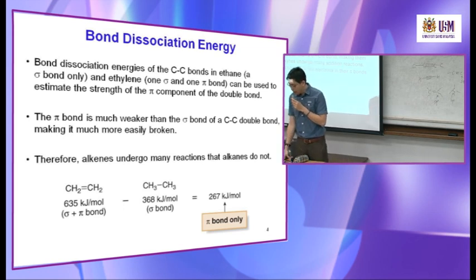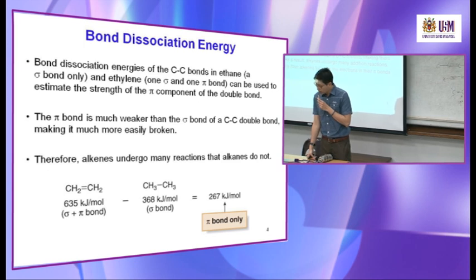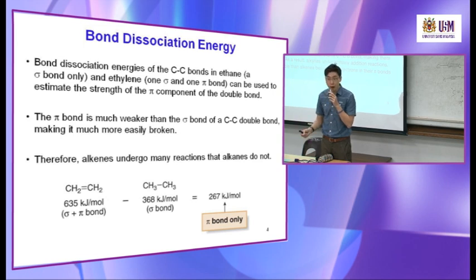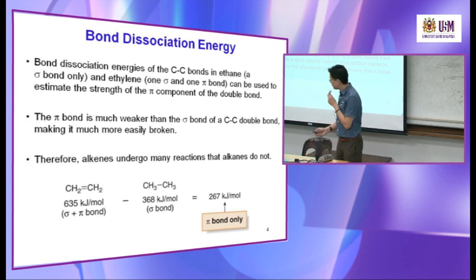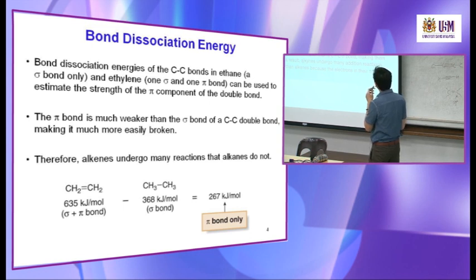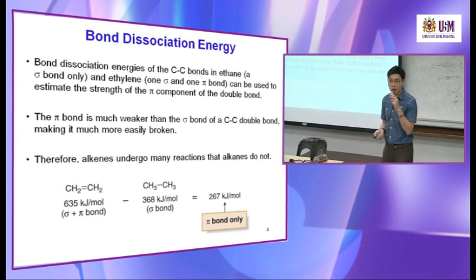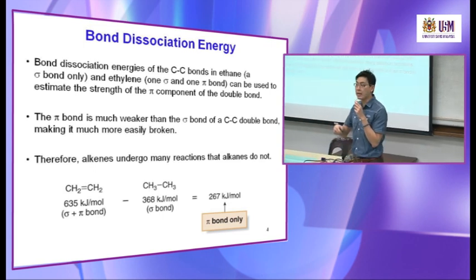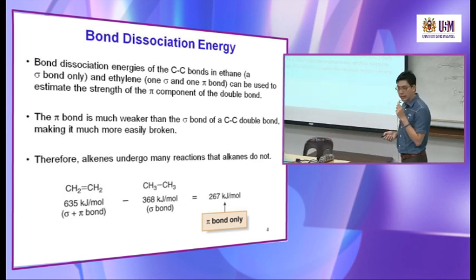Regarding bond dissociation energy: in ethylene (a double bond), you have one sigma bond and one pi bond. In acetylene (a triple bond), you have one sigma bond and two pi bonds. To find the bond energy of the second pi bond in acetylene, subtract the bond energy of ethylene from that of acetylene — triple bond minus double bond gives the second pi bond energy.